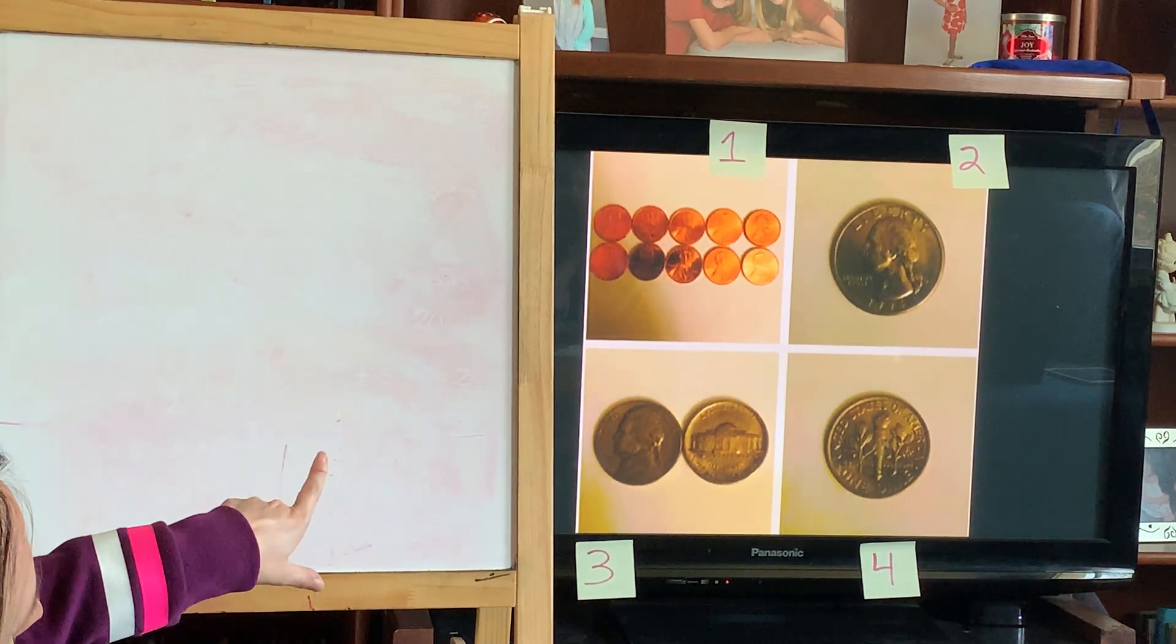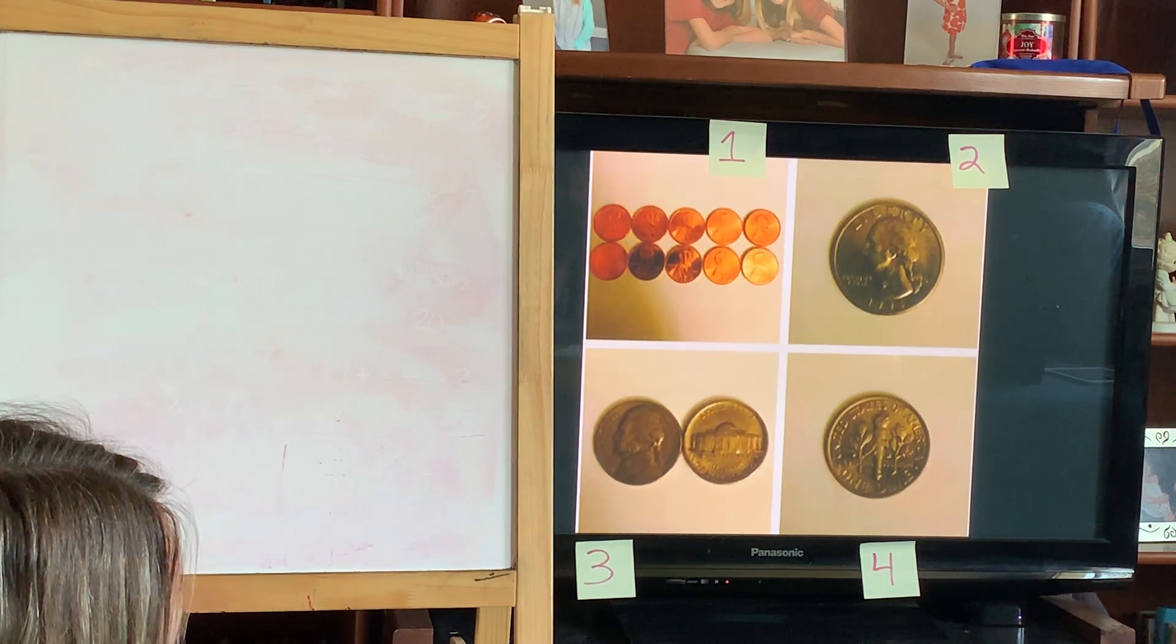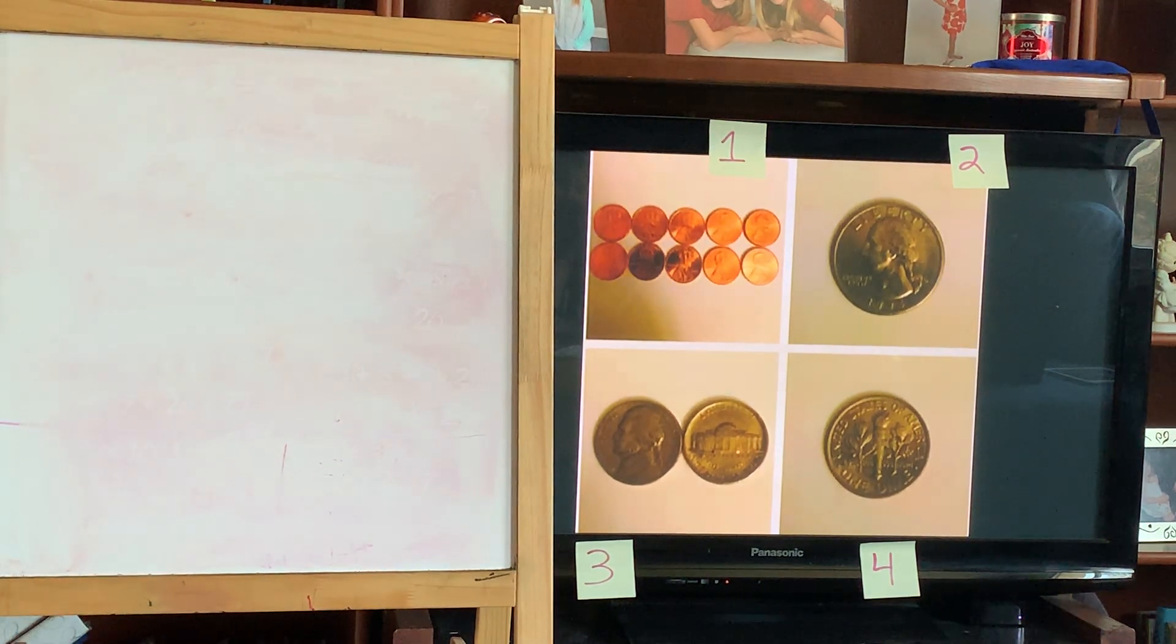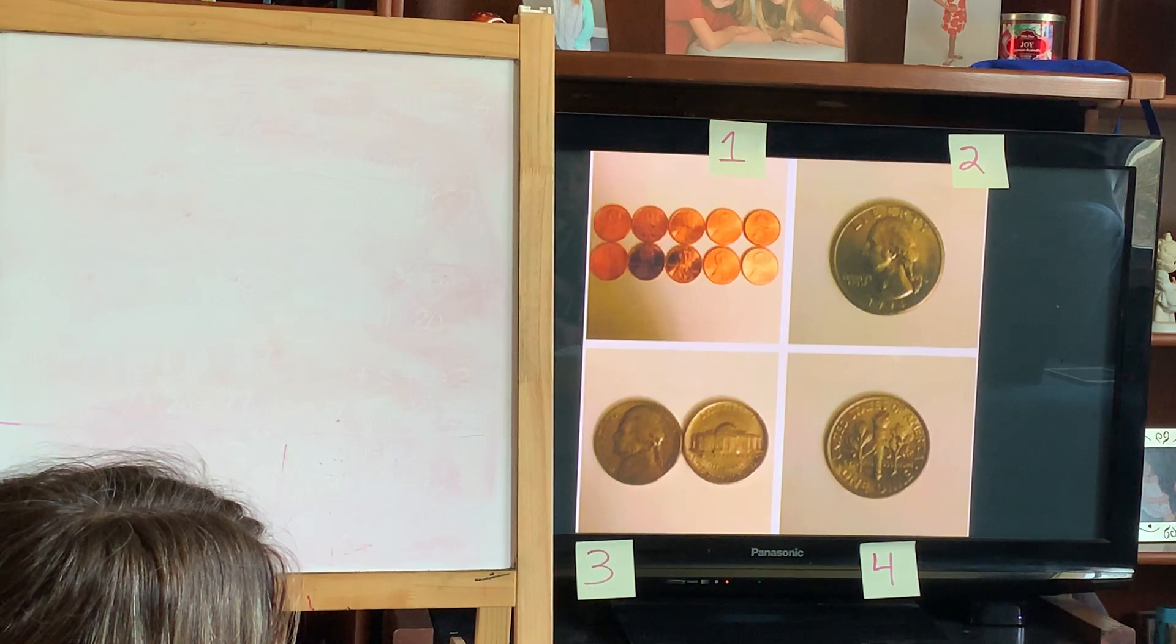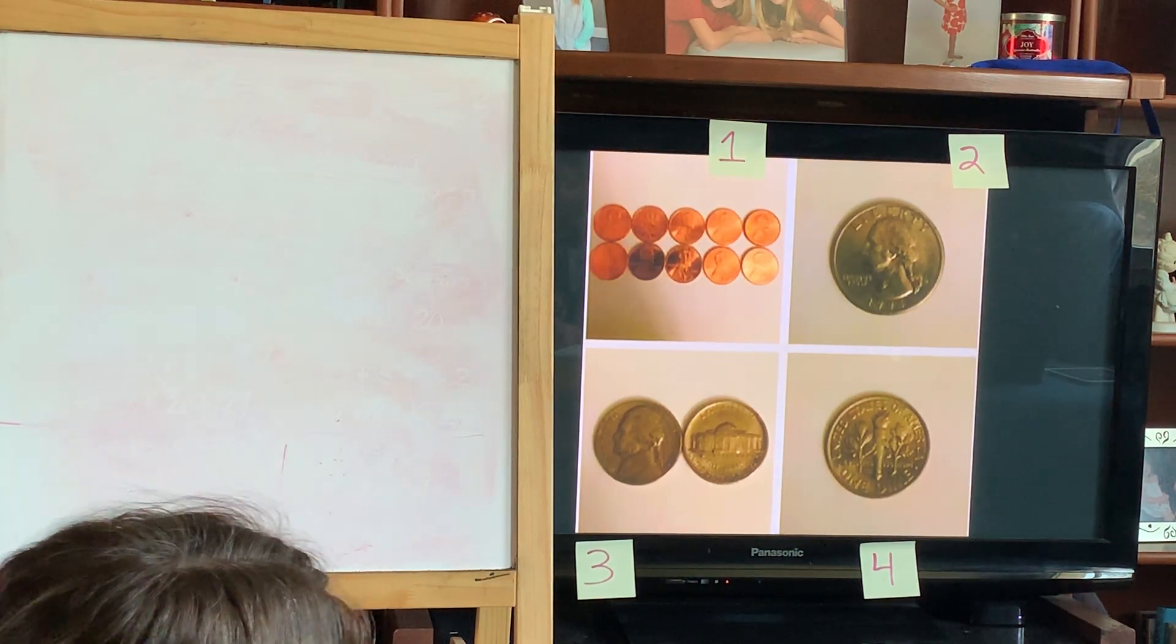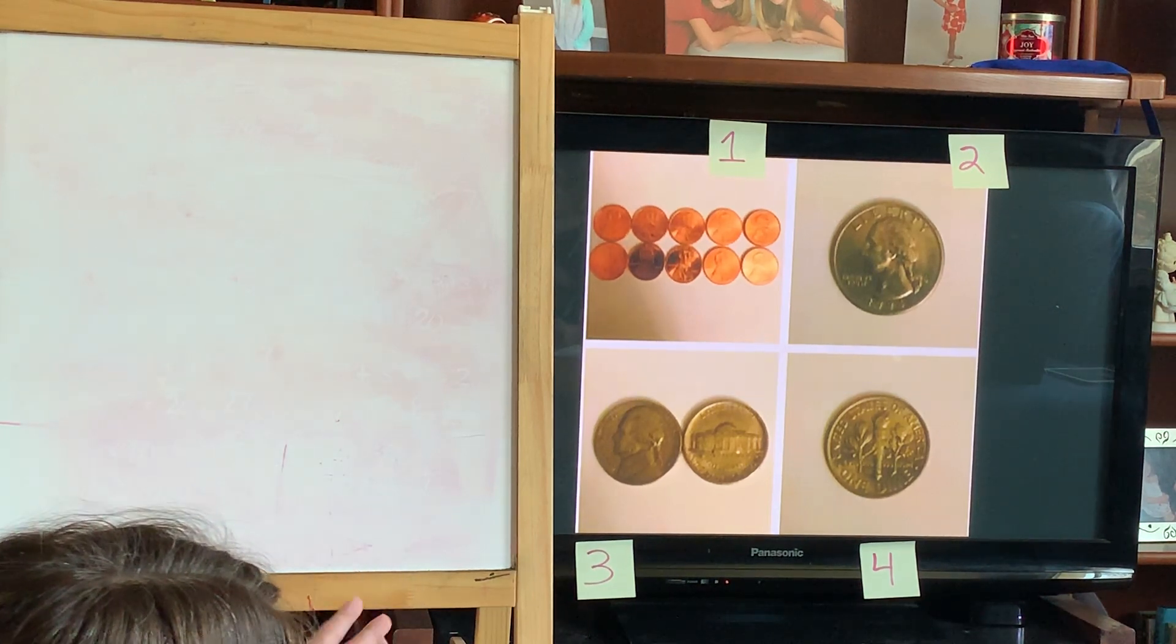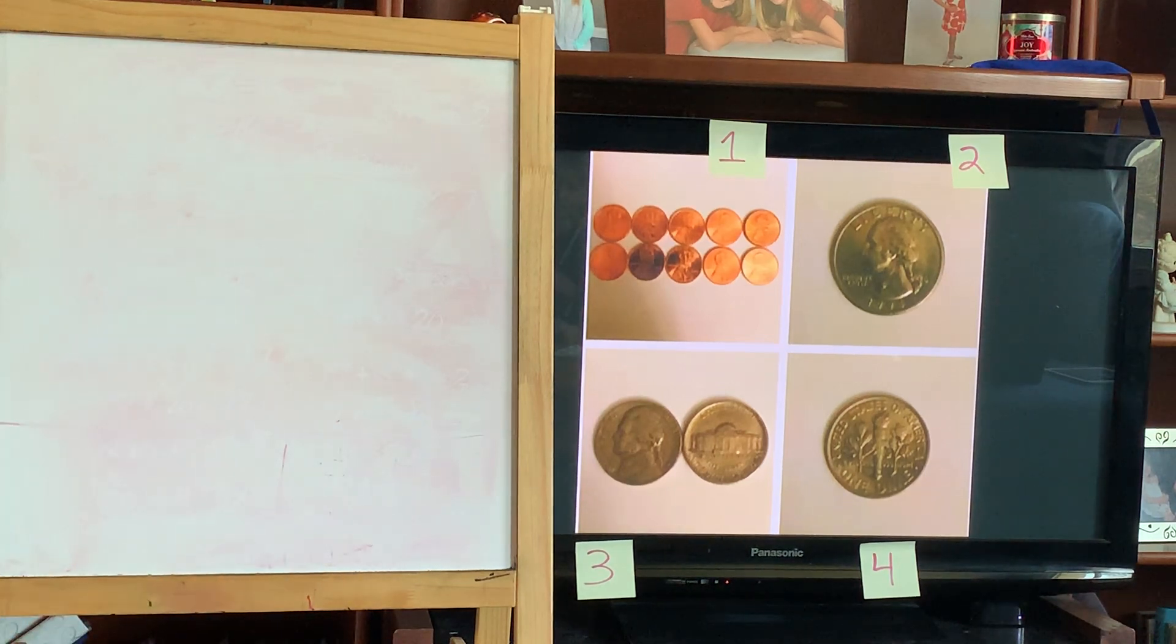So we now have a reason for number one, we have a reason for number two, and we have a reason for number four. Is there any reason why we can think why number three might not belong? Well I was just thinking, just like I said for number four, that three there's one head showing and one tail showing. Okay, so because that one has just two and they're showing a head and a tail while the other ones are either only showing all heads or all tails. Good.